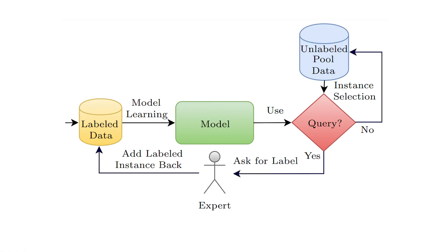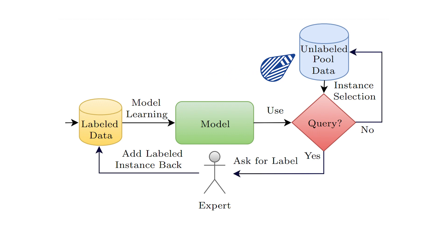Moreover, the reduction in time taken to train the model and put it into production often outweighs these costs. And you can use some automatic annotation tools and manually correct them, again reducing costs. The labeled set of data is what your current model is being trained on, and the unlabeled set is the data you could potentially use but hasn't been annotated yet.